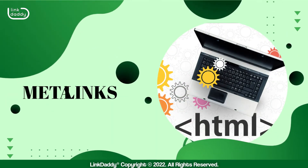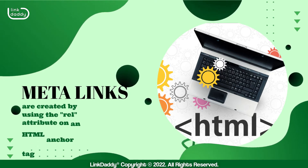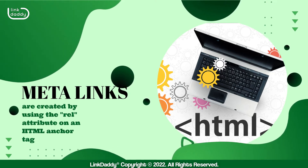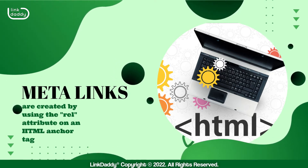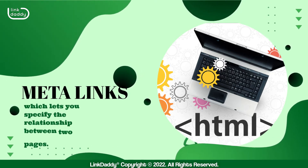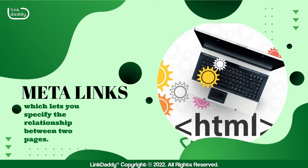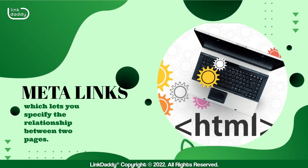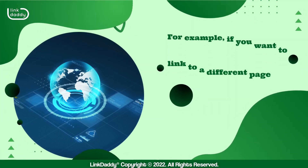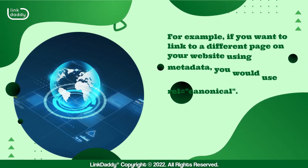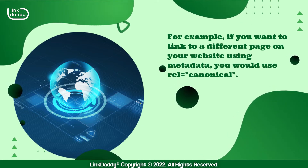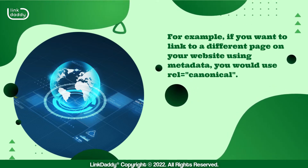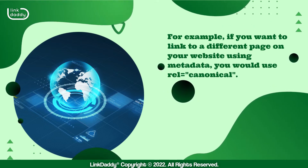Meta-links are created by using the attribute on an HTML anchor tag, which lets you specify the relationship between two pages. For example, if you want to link to a different page on your website using metadata, you would use rel.